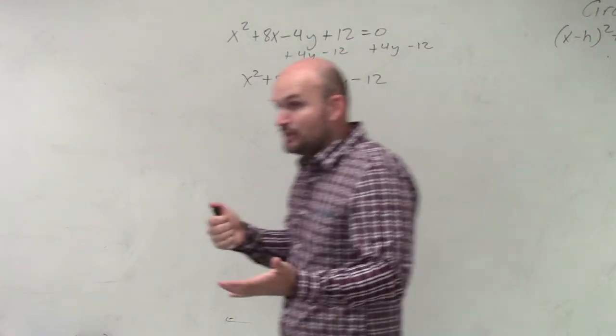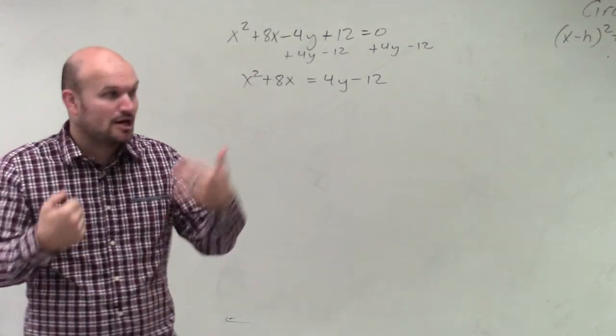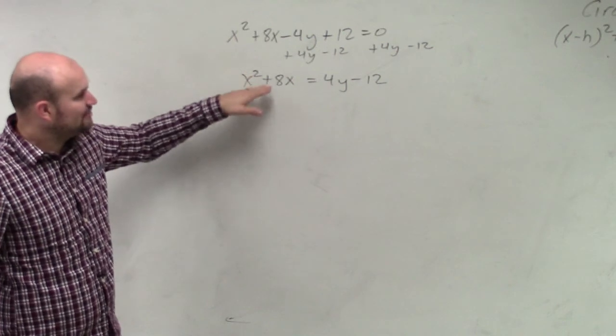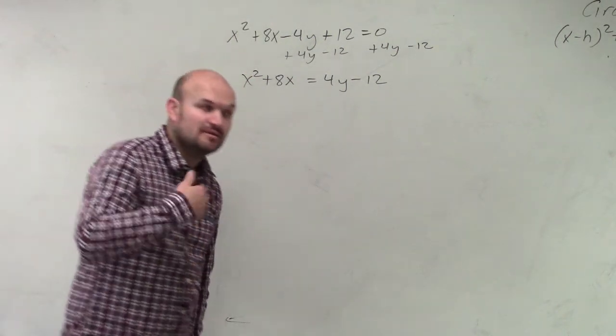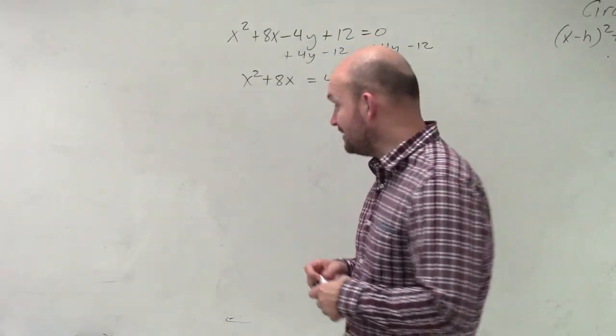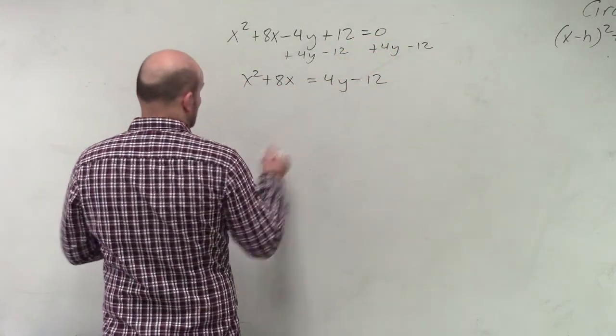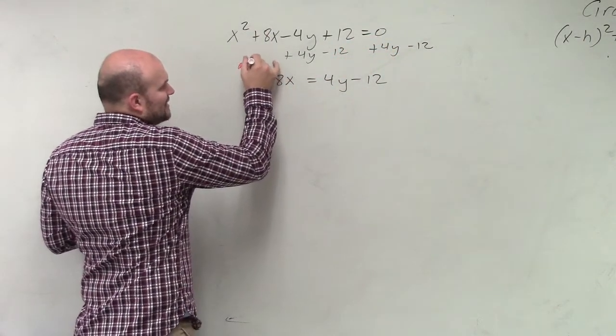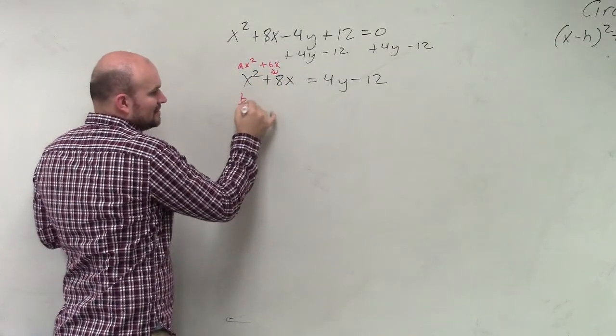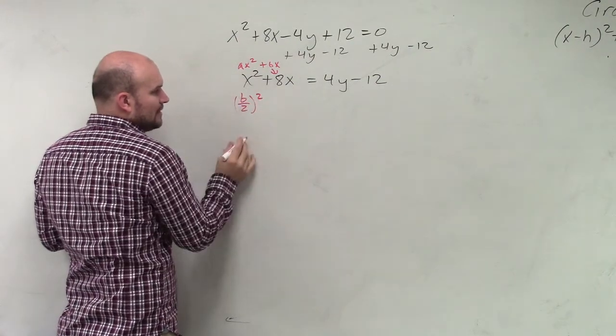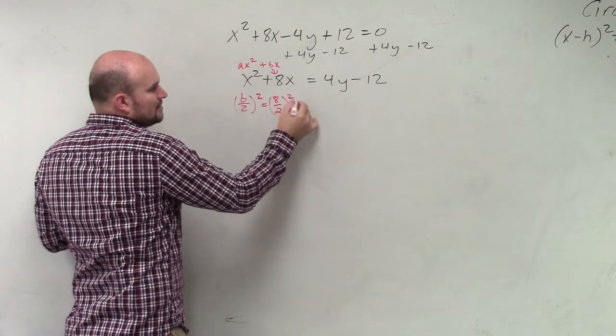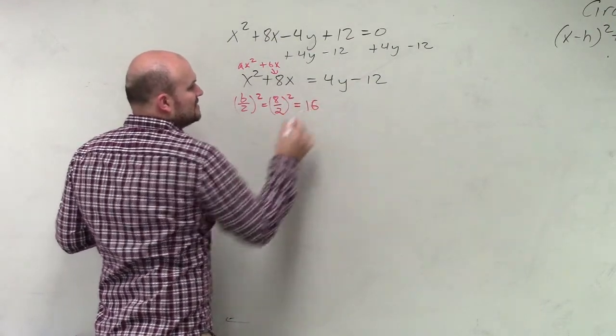All right. Now, again, this main thing we're trying to do is complete the square. We're trying to create our perfect square trinomial. So I have x² + 8x. And if you guys remember, the main thing about completing the square is taking your b and dividing it by 2 and then squaring it. So that's x² + bx, right? So b is 8. So b divided by 2 squared. 8 divided by 2 is 4. Square that, you get 16.